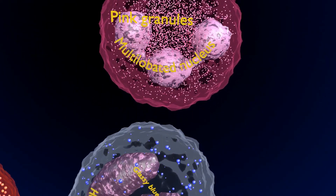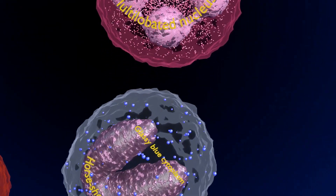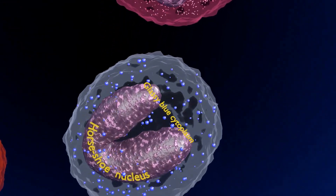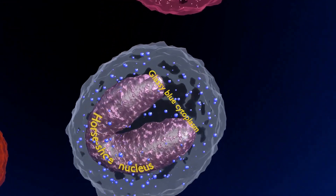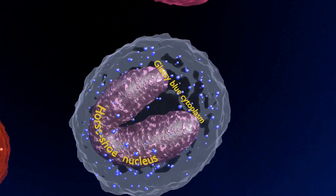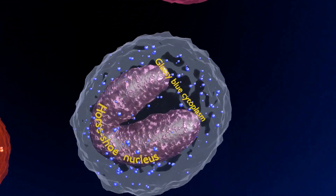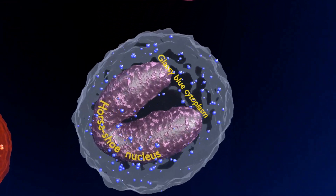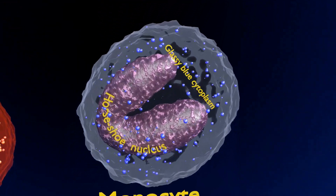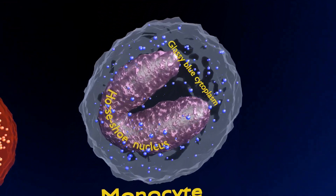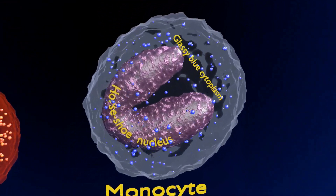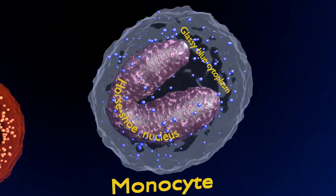You are seeing a monocyte, which is one of the largest types of white blood cells. They are responsible for attacking and breaking down germs and bacteria that enter the body. Monocytes are phagocytic cells, meaning that they break down infections by eating them.